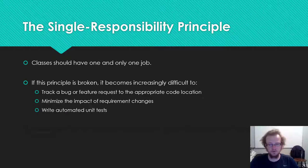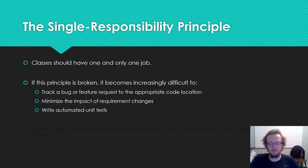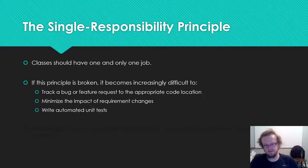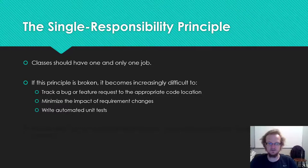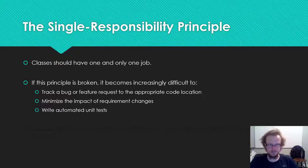It becomes harder to understand where in the code a feature is implemented and where a bug could occur. It can also hinder your ability to minimize the impact of requirements changes. If a requirement changes two or three or four times, every time you change the code to reflect that change you're potentially changing code used by three, four, or five different areas of the system, and each time you do that there are ripple effects to all those other subsystems. It also makes it more difficult to write automated unit tests.